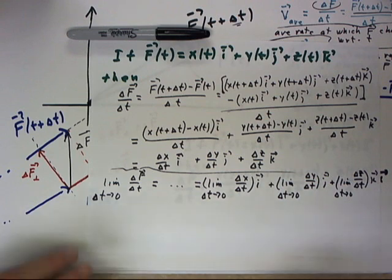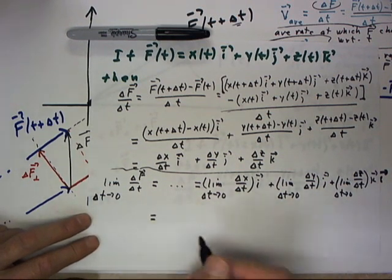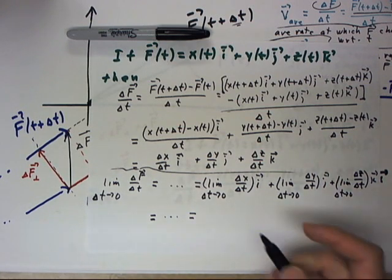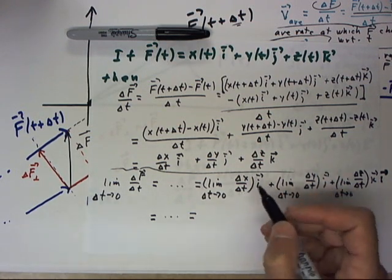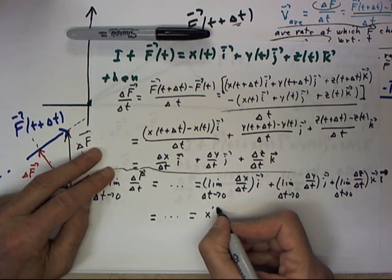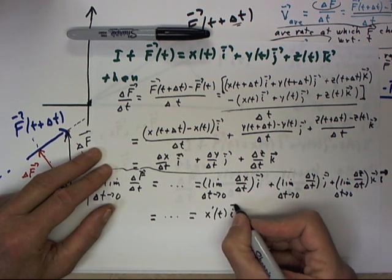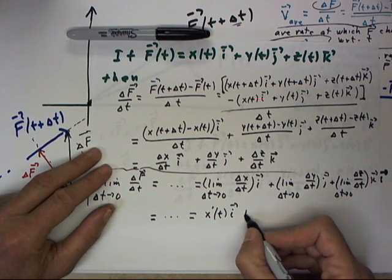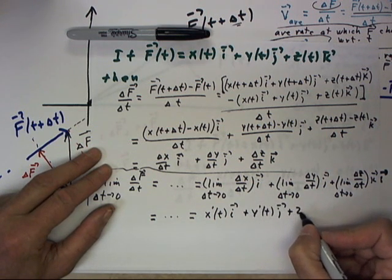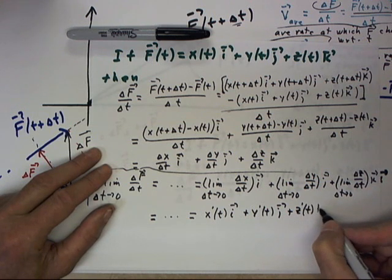Now, a little more hand waving here, but the limit as delta t goes to zero of delta x over delta t is what? That's just x prime of t. So we have x prime of t i plus y prime of t j plus z prime of t k.